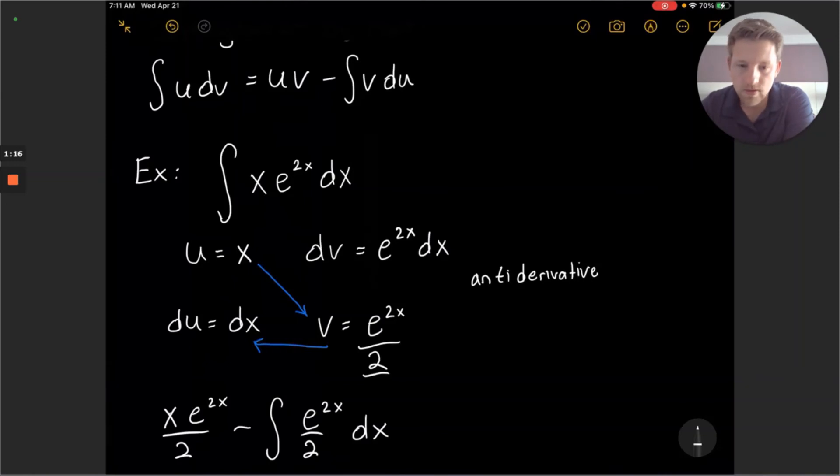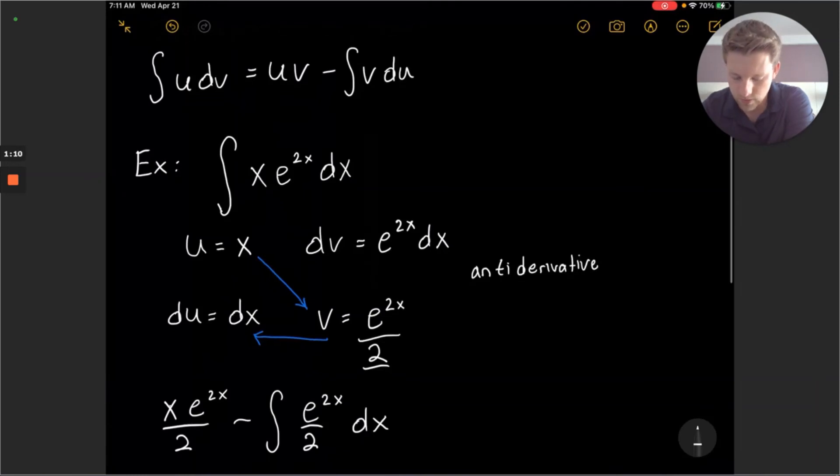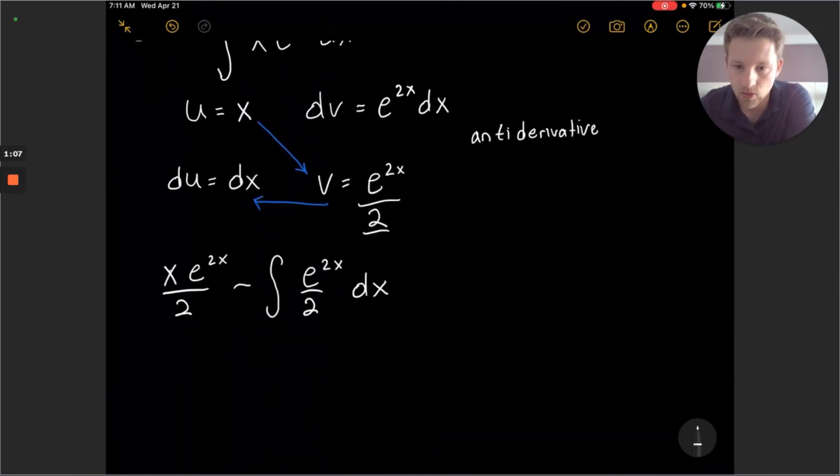So this brings it to a much simpler integral, an antiderivative calculation. We just have to go out and find the integral again of e to the 2x.